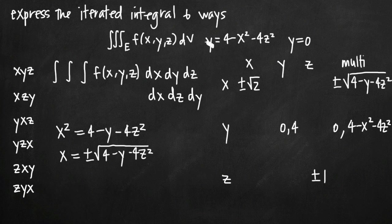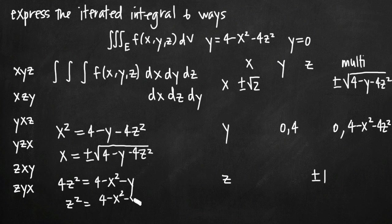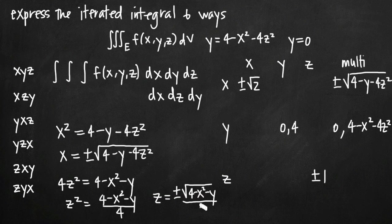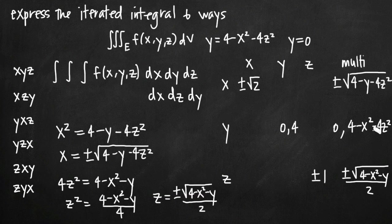For the multi-column entry for z, I add 4z² to both sides and subtract y to get 4z² = 4 - x² - y. Dividing by 4 gives z² = (4 - x² - y)/4, and taking the square root gives z = ±√(4 - x² - y) / 2. Again, because I have positive and negative, that's two limits of integration. So my multi-column for z is ±√(4 - x² - y) / 2.